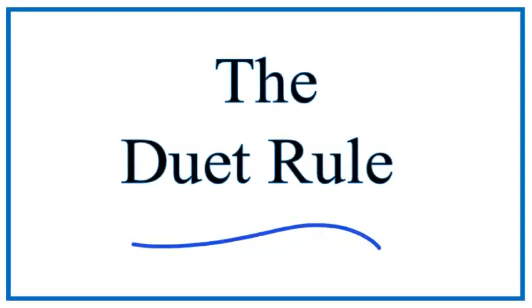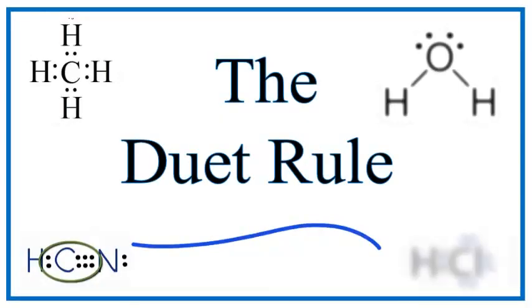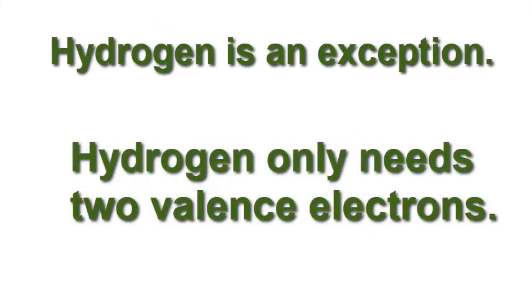There's one big exception to the octet rule that you need to know to be able to draw Lewis structures. Hydrogen only needs two valence electrons to fill its outer shell. Instead of an octet, we'll call it a duet. You could even call it a dynamic duet if you like.